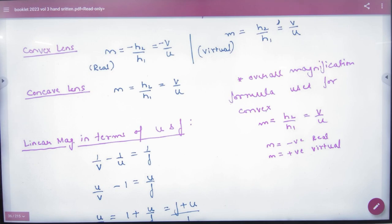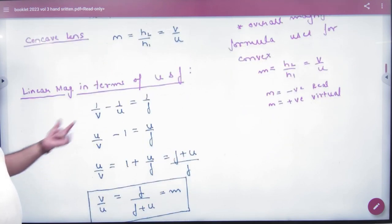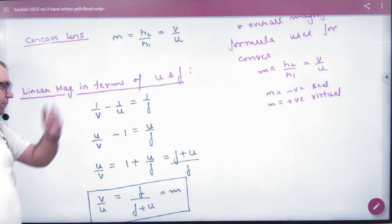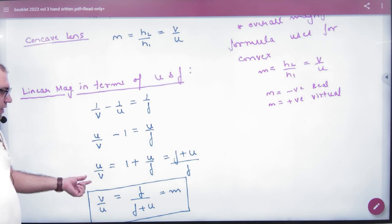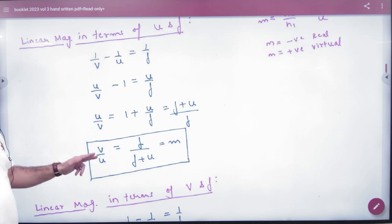Now we will note another thing, that magnification M, U and F, what is the formula? Note the lens formula: both sides multiply by U by V, the rest of the term is one side. Reciprocal V by U, V by U is magnification. So please note this formula.